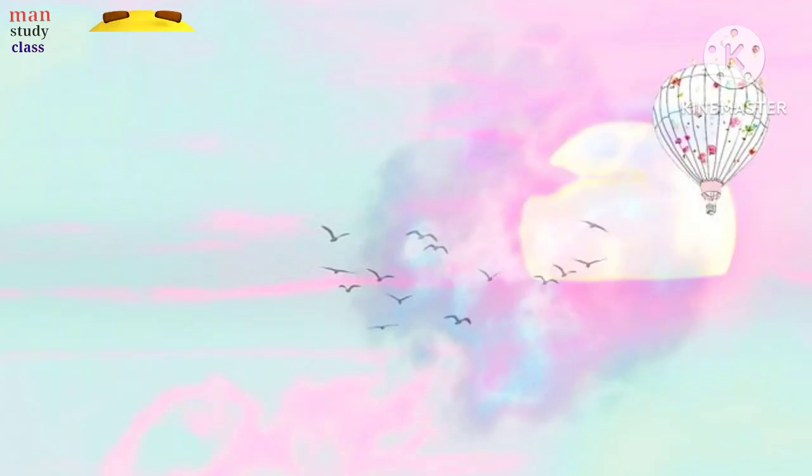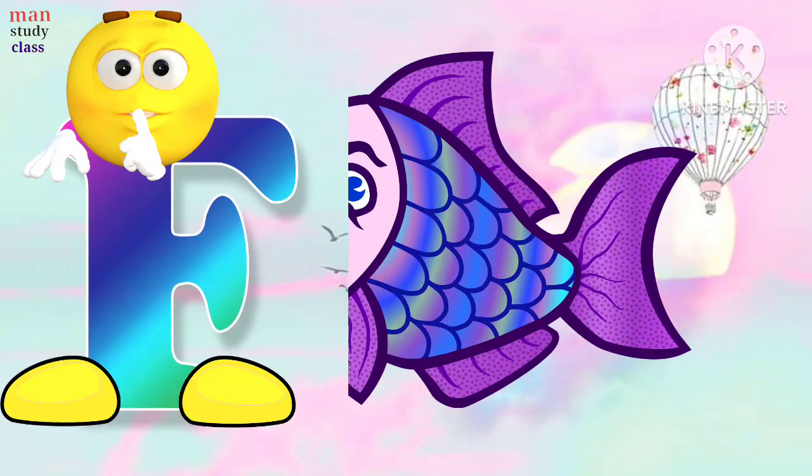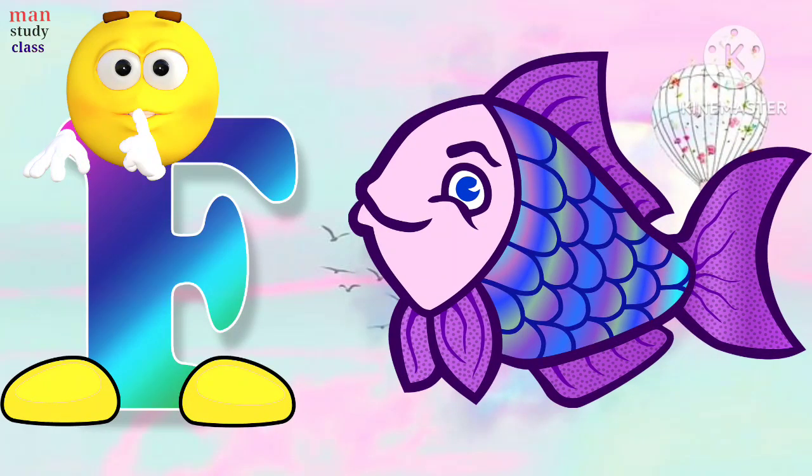E for elephant. Elephant means hati. F for fish. Fish means machli.